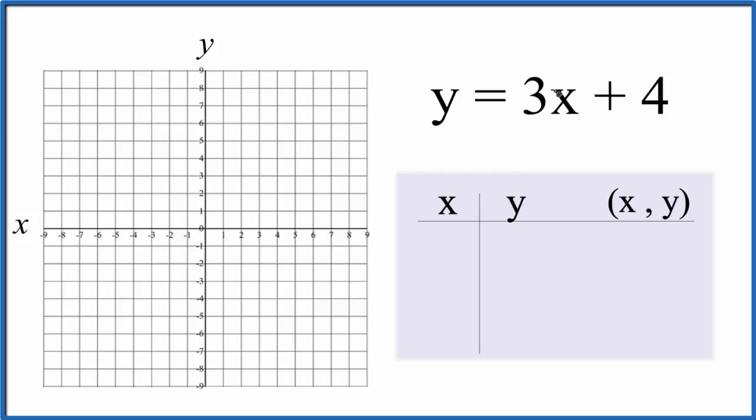So I like to put a zero in for x starting out because that's going to show up on my graph. Three times zero, that's zero, so we have y is four. If we put a one in for x, three times one is three, three plus four is seven, and let's put negative one in.